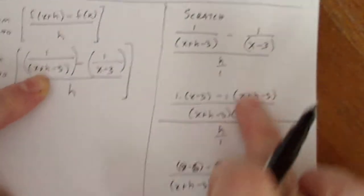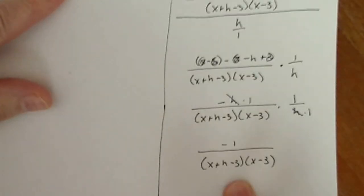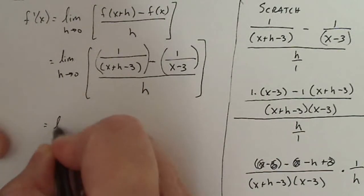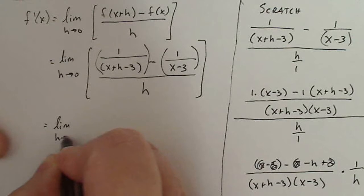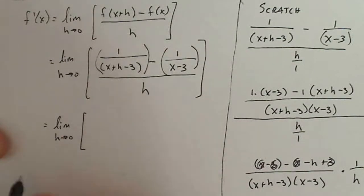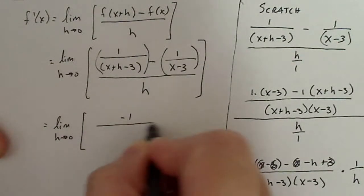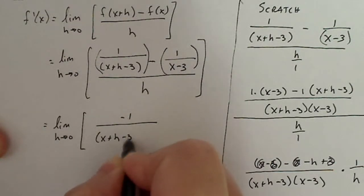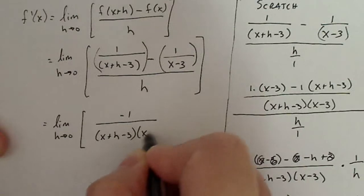So to continue on I can rewrite this as minus one divided by x plus h minus three times x minus three. All right, now I'm going to take this guy and I'm going to substitute in for this guy. This is the same statement all the way down, so I'm going to make that substitution. So I'm going to rewrite since I haven't actually taken the limit, I'm going to write limit as h goes to zero of minus one divided by x plus h minus three times x minus three.